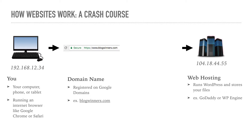The next step in the process is the web hosting provider, such as WP Engine or GoDaddy. If you look on your screen, you'll see our graphic of the servers, and underneath that graphic is another IP address. Just like your computer at home, the web hosting provider or server also has to have an IP address so your computer knows where to look for the information. Your server runs WordPress and it hosts the files on your website.